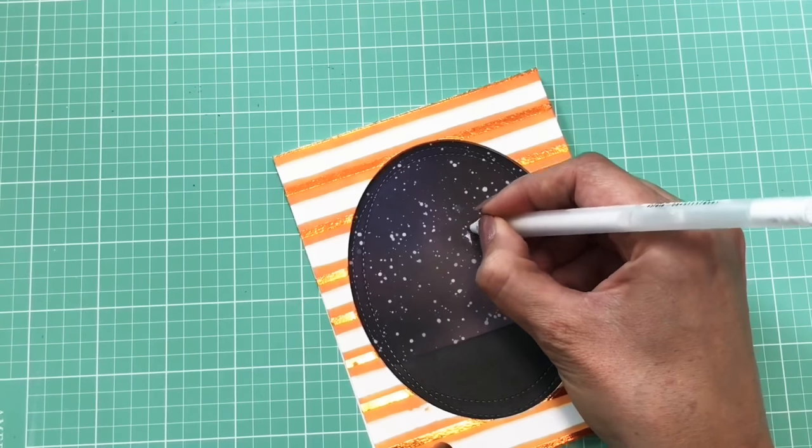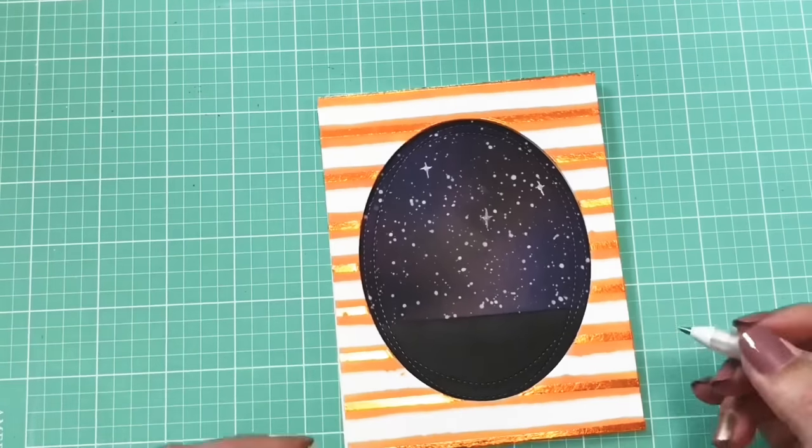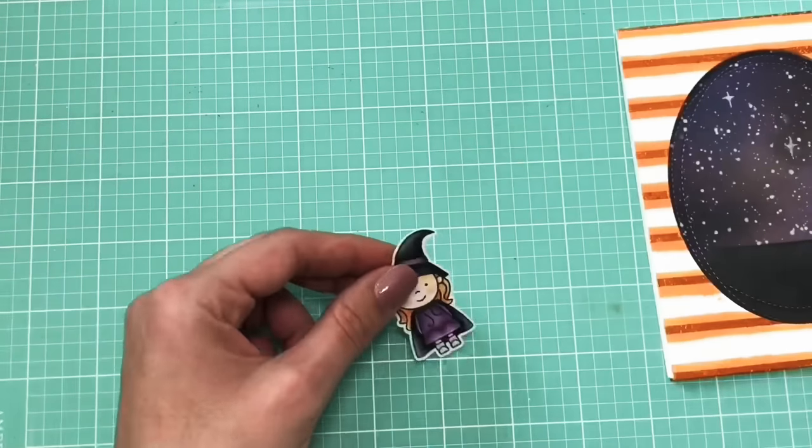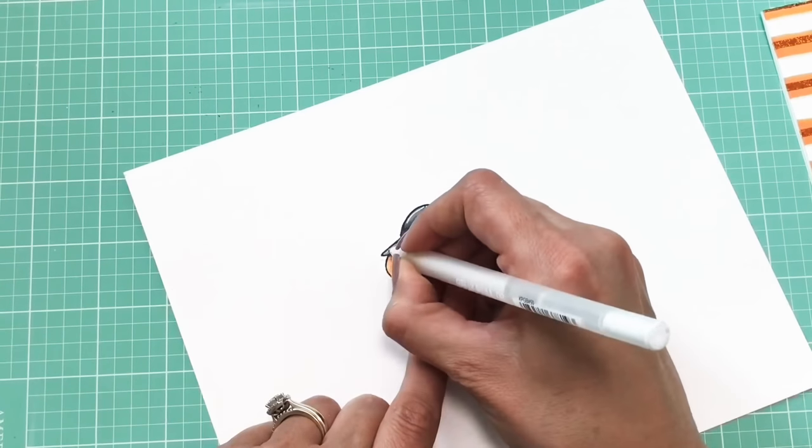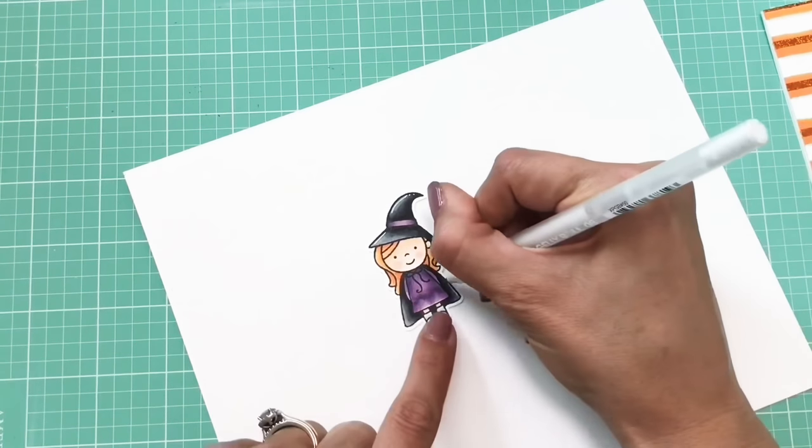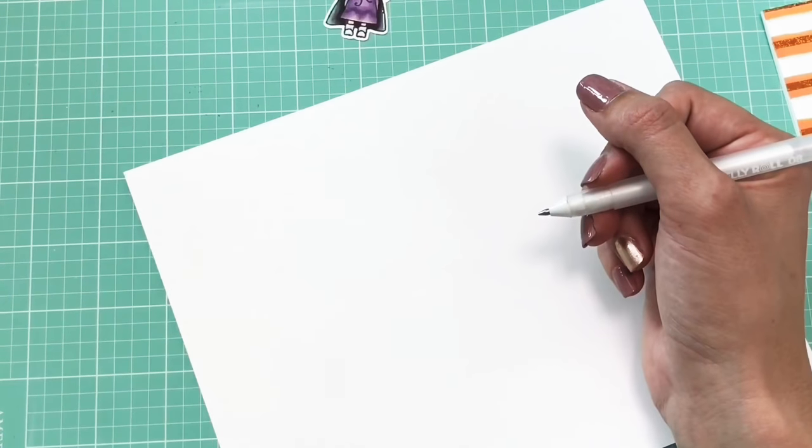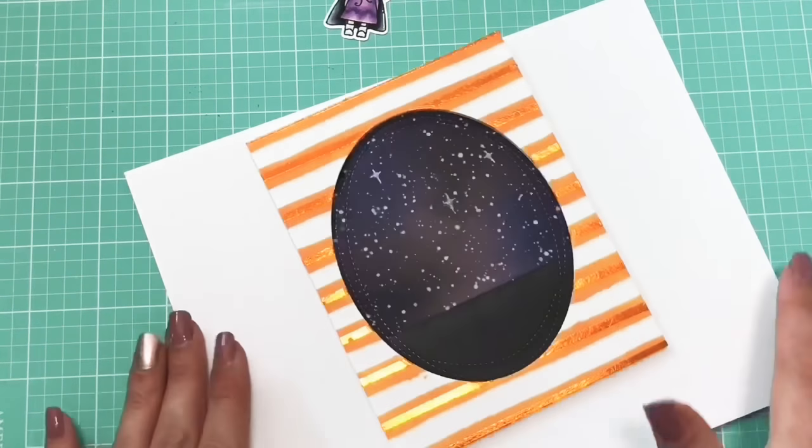I'm placing that down on my card base. And now I'm going to put in that night sky background that I made earlier and I'm going to use some Nuvo glue here to adhere that. And you want to make sure you get that glue around the edges so that it doesn't kind of stick up because you really want to be able to see that dimension.